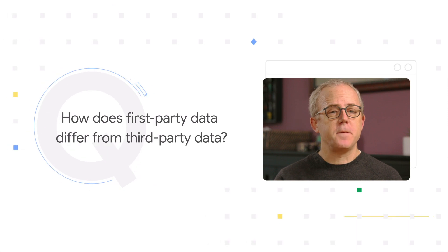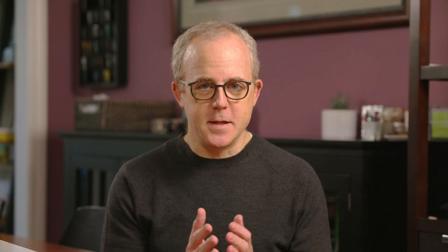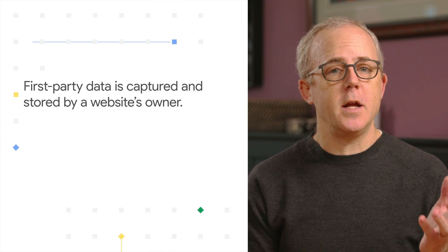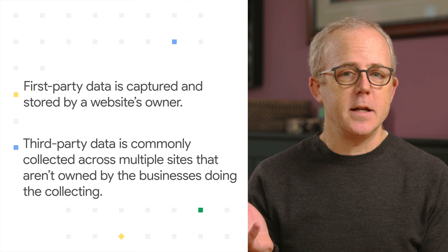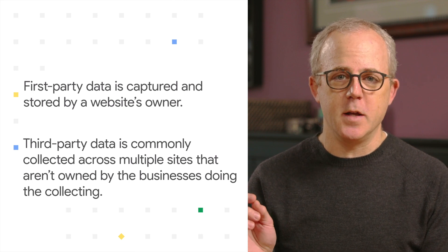How does first-party data differ from third-party data? This is important — it's the reason why the ad industry is investing more in privacy-forward first-party data and moving away from third-party data. There are two main differences. First, who is collecting the data? First-party data is captured and stored by the website or app owner. Third-party data is commonly collected across multiple sites that aren't owned by the businesses doing the collecting. The second difference is transparency.